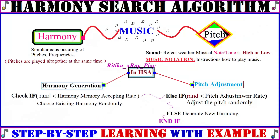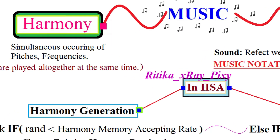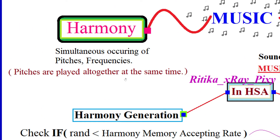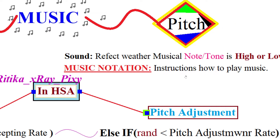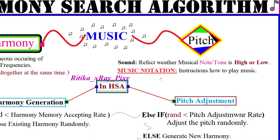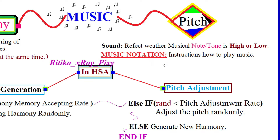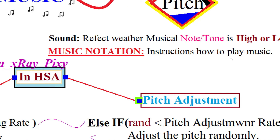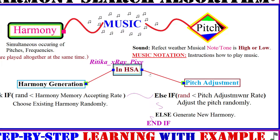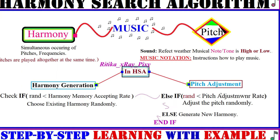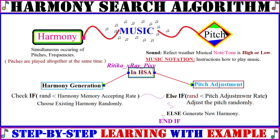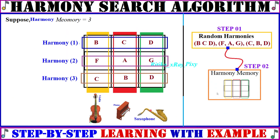Sound waves can be created by musical instruments or by human voices — for example, harp, piano, and guitar. In the Harmony Search algorithm, we focus on harmony and pitch. Harmony means the simultaneous occurrence of pitches or frequencies played all together. Pitch refers to whether a musical note is higher or lower than another. We focus on harmony generation using the Harmony Memory Acceptance Rate and pitch adjustment using the Pitch Adjustment Rate.